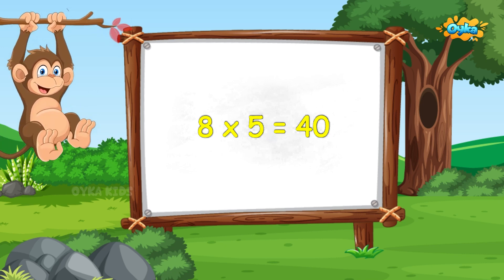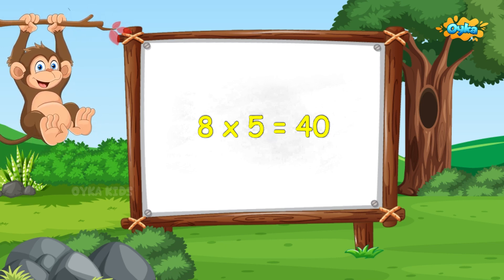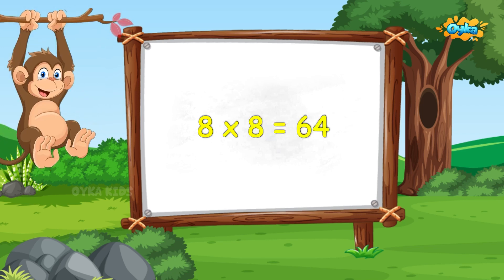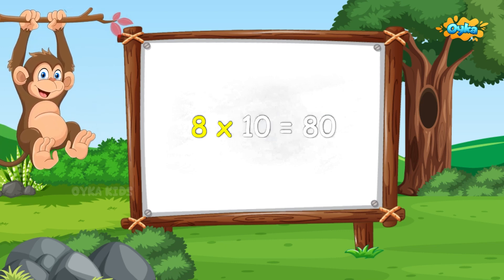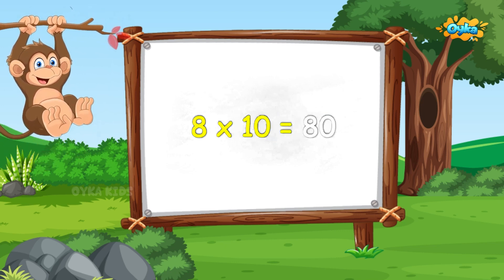8 5s are 40, 8 5s are 40, 8 6s are 48, 8 6s are 48, 8 7s are 56, 8 7s are 56, 8 8s are 64, 8 8s are 64, 8 9s are 72, 8 9s are 72, 8 10s are 80.